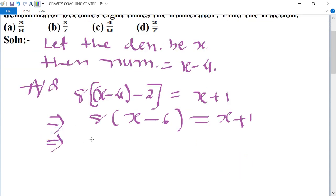Implies that 8x minus 48 equals x plus 1, so 8x minus x equals 1 plus 48.